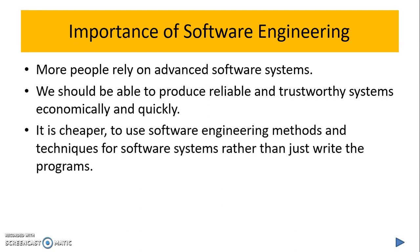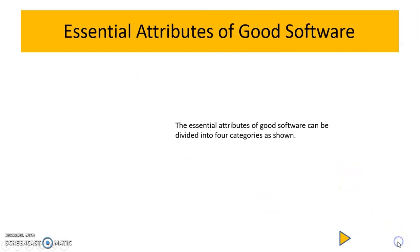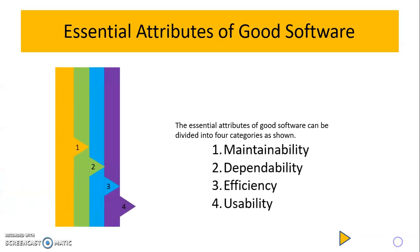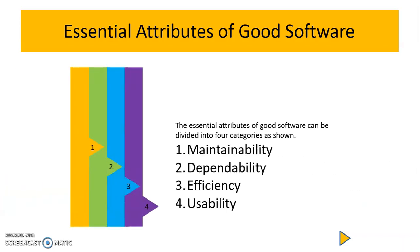Now let's look at the essential attributes of good software. These attributes can be divided into four major categories: the first is maintainability, the second is dependability, the third is efficiency, and the fourth is usability.